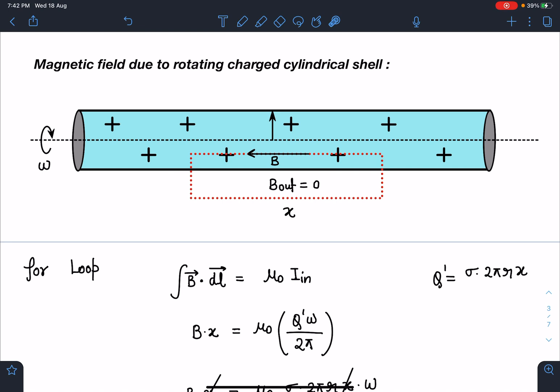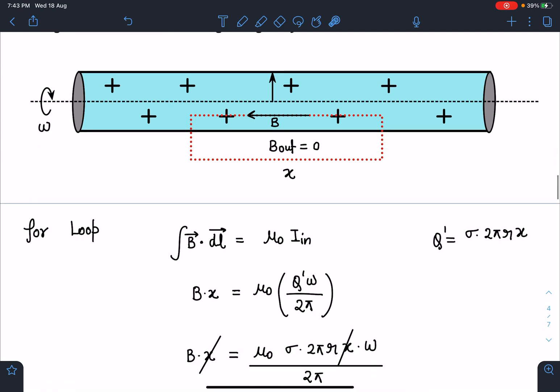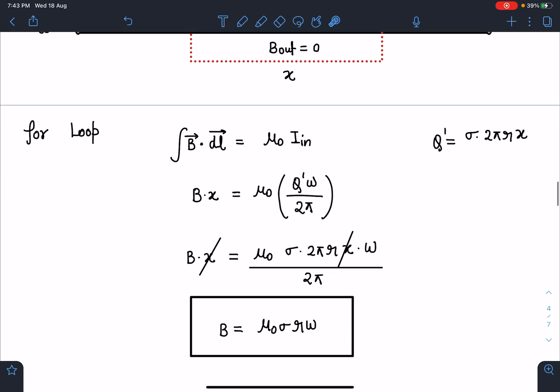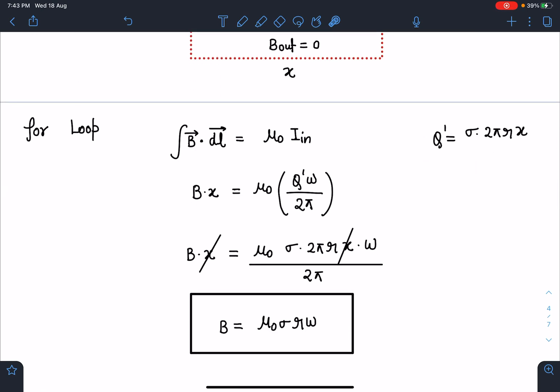When I apply B·dl in this loop, for this side it becomes zero because field is perpendicular, here field itself is zero, again perpendicular. So overall B·dl will become B×x and that equals μ₀ times the current inside. This current due to moving charge I can write as q'ω/2π, where q' is the charge inside this Amperian loop.